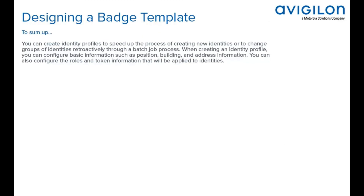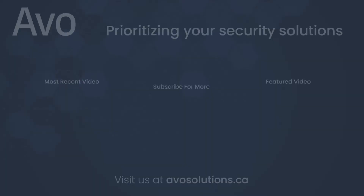To sum up, you can create identity profiles to speed up the process of creating new identities or to change groups of identities retroactively through a batch job process. When creating an identity profile, you can configure basic information such as position, building, and address information. You can also configure the roles and token information that will be applied to identities.